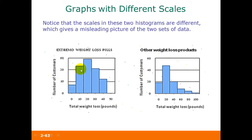The one on the left is exaggerating the frequencies of customers who lost weight compared to the other graph. Also, the horizontal scales are quite different. The one on the left goes up by tens with a top value of 50, but the one on the right goes up to 100.